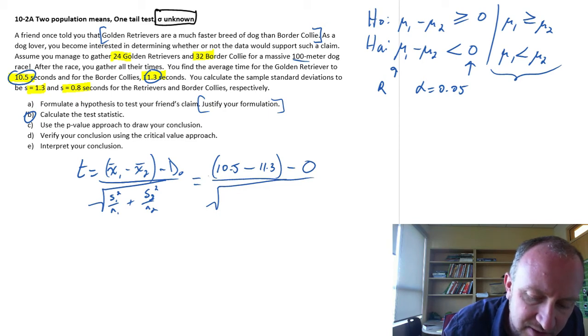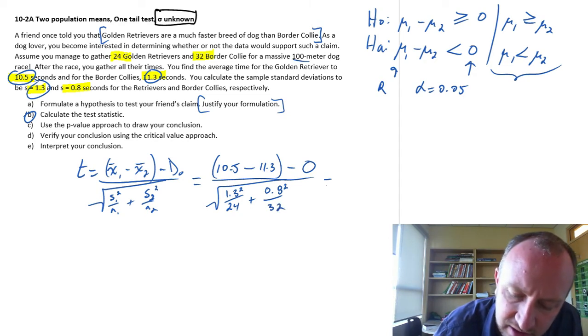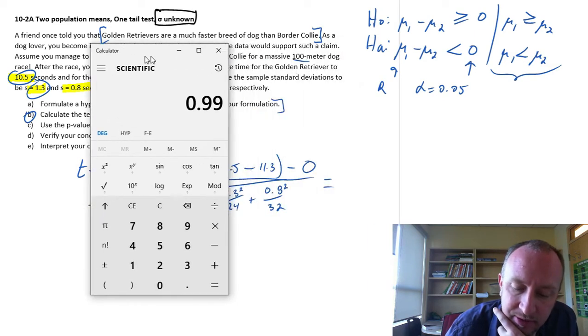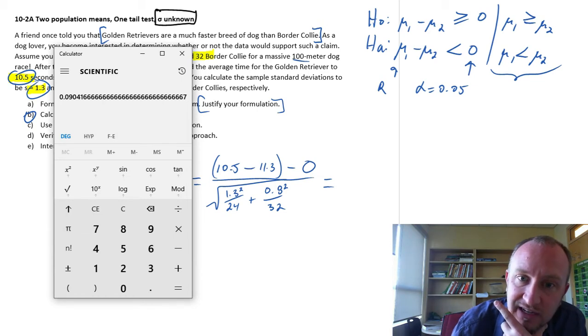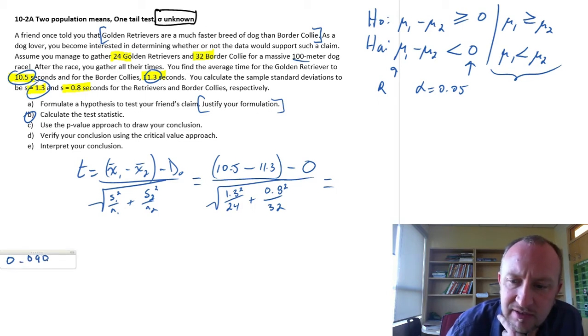And I'll put in this hypothesized difference of zero. It doesn't change anything. Now this is going to be s1 so that's my golden retriever. So that's 1.3 squared over I have 24 golden retrievers. And this is 0.8 squared and I have 32 border collies. So let's just plug in our numbers. I'm going to do the denominator first. And I'm actually going to actually use it again. So it's helpful sometimes to write down intermediate steps especially if you need to reuse the information again.